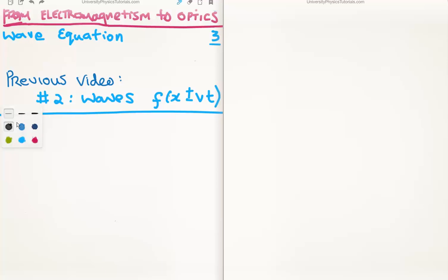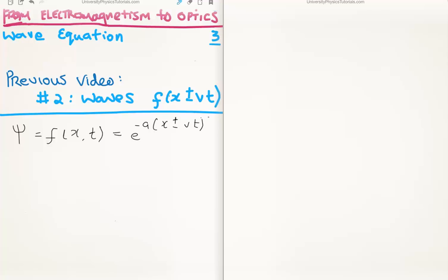Just a very quick recap. When we're talking about waves we give the placeholder psi for the waves, and if it's a one-dimensional wave equation it will be a function of position and time. We call this the wave function because it describes exactly what the wave looks like. For example, we might have e to the minus a times (x plus or minus vt) squared, which gives us a Gaussian wave function — moving to the right if it's minus v times t, and moving to the left if it's plus v times t.